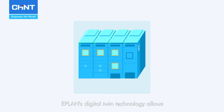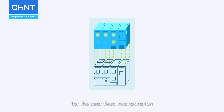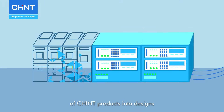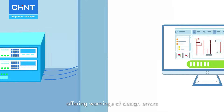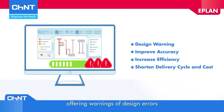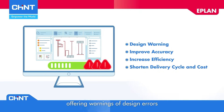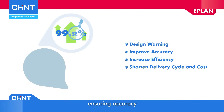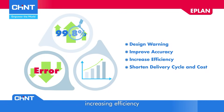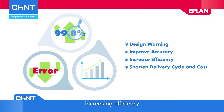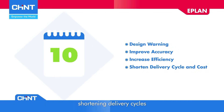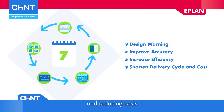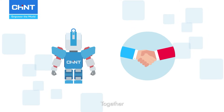ePlan's digital twin technology allows for the seamless incorporation of Jint products into designs, offering warnings of design errors, ensuring accuracy, reducing mistakes, increasing efficiency, shortening delivery cycles, and reducing costs.